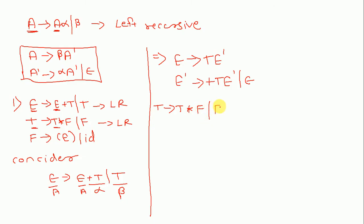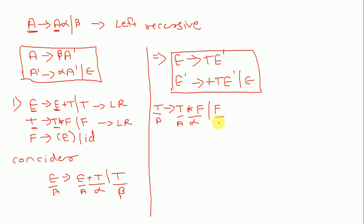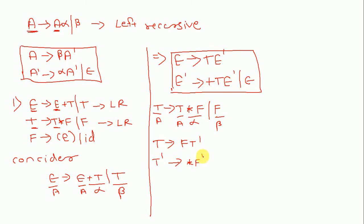The second production is T gives T star F slash F. Here we remove the left recursion of T. This T is my A, this T is again my A, star F is alpha, F is beta. So T gives F T-dash, and T-dash gives star F T-dash slash epsilon.